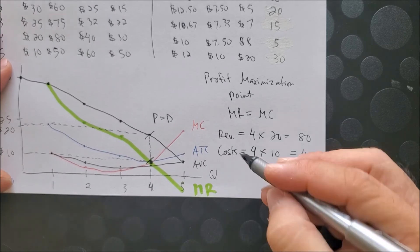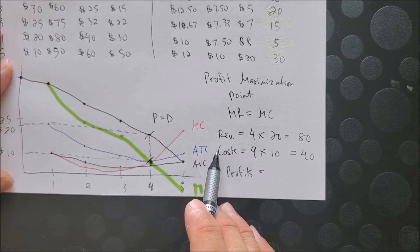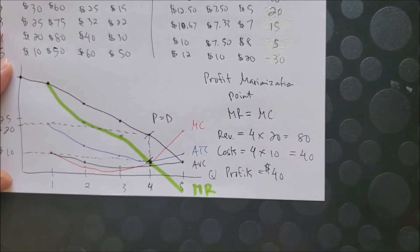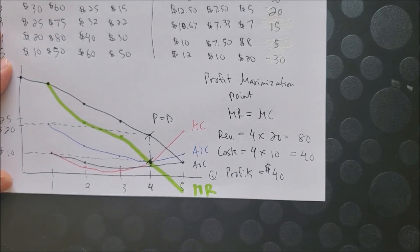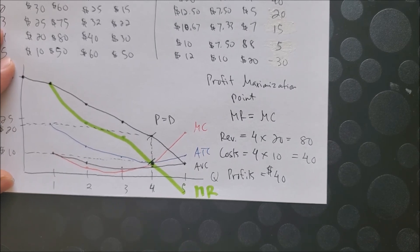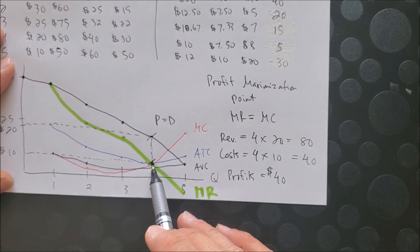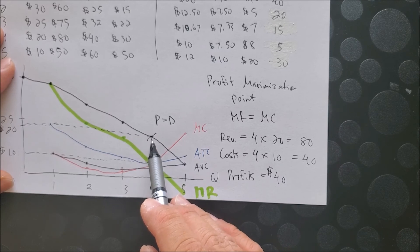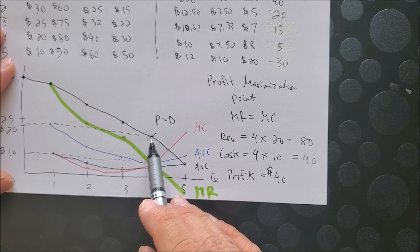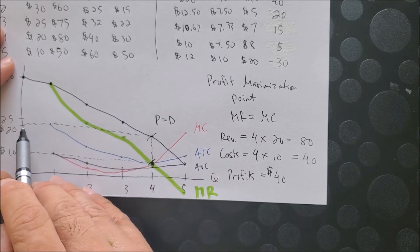So clearly, when we calculate profits as revenue minus cost, 80 minus 40, the monopolist is able to make a lot of money in terms of profits, $40 worth. So now it makes sense for this monopolist to be able to set price, not where MC and MR intersect, but where consumers are willing to pay for this good, this product, this service. And since we do have price, the demand curve that's separate from MR, it would make sense for the monopolist to go ahead and set price at this point here and charge customers $20.